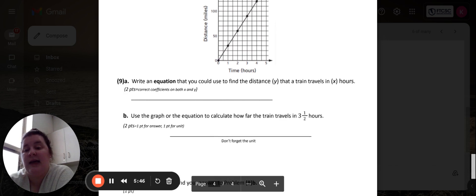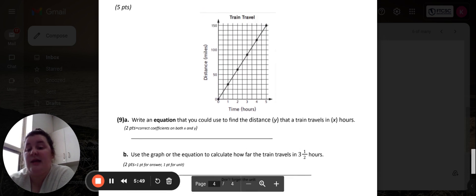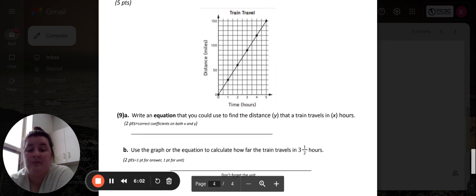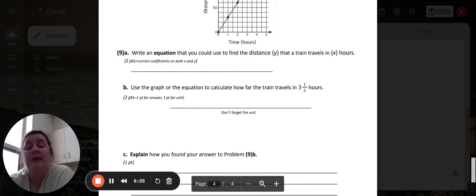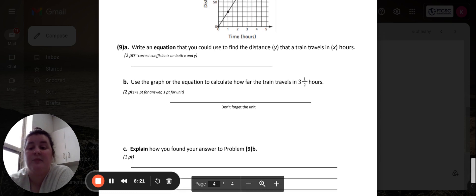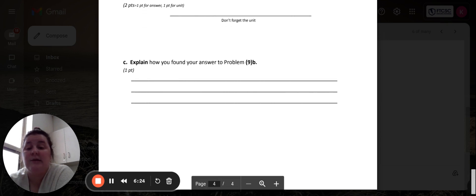Number nine. Part A wants you to write an equation that you could use to find the distance or Y that a train travels in X amount of hours. And then part B wants you to use the graph or the equation to calculate how far the train travels in three and a half hours. And then part C wants you to explain how you found your answer for part B.